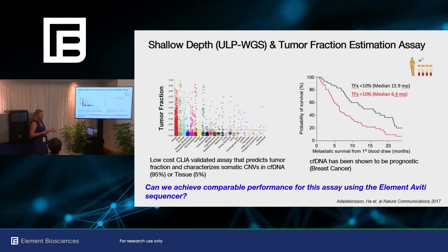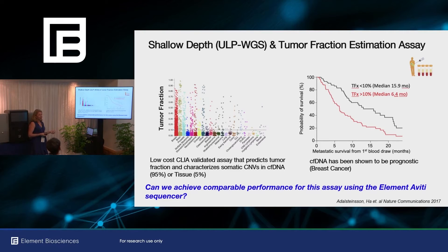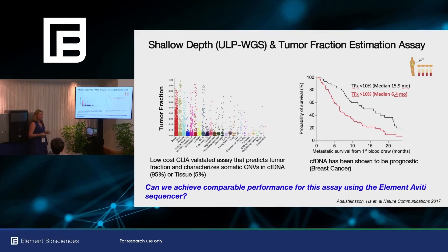This is a really low-cost assay — it costs less than $100 for us to deliver these results in our lab. We can use this as a screening application for cell-free DNA samples. We use a copy number analysis that characterizes the tumor fraction, so we can deliver this in our clinical lab as a tumor fraction estimate for patients' blood draws over time. We also run this assay for tissue so we can QC a sample to make sure it has enough tumor to do a whole exome analysis or whole genome sequencing downstream.